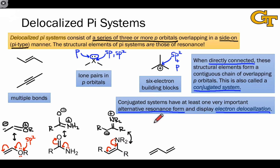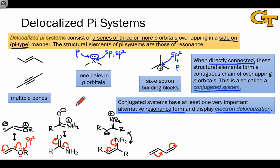Conjugated systems are not just confined to three atoms and are not just confined to molecules containing lone pairs and pi bonds. For example, the molecule 1,3-butadiene contains two double bonds linked through a single bond. This molecule has an important resonance form that shows how the p orbitals on the internal carbons of the double bonds can overlap. In this four-atom pi system, the four electrons involved — two electrons from each double bond — are delocalized over all four carbons of the molecule.